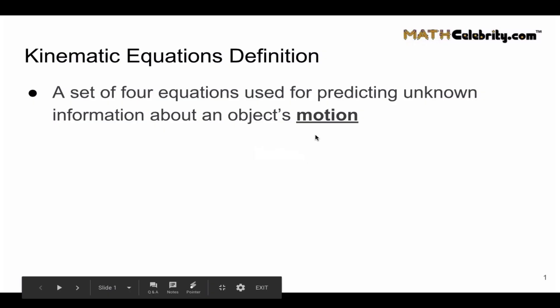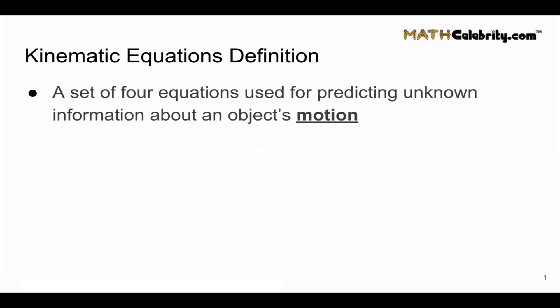So first let's walk through the definition. Kinematic equations are a set of four equations used for predicting unknown information about an object's motion. Now notice the key word here I bold fonted and underlined is motion. We care in the four equations about the motion of an object or a thing.